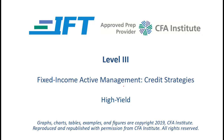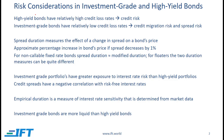Fixed income active management credit strategies — a summary. The first learning outcome has to do with risk considerations in investment grade and high-yield bonds. High-yield bonds have relatively high credit loss rates, which means that credit risk is a major concern. With investment grade bonds we have relatively low credit loss rates, and here we are more concerned with credit migration risk and spread risk.